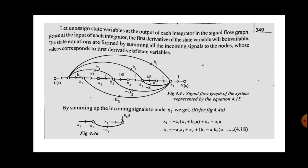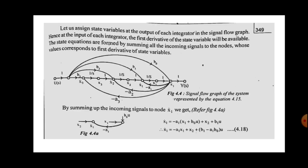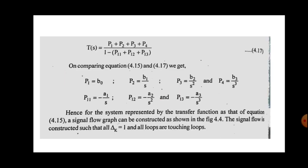All integrators are represented with gain 1/s. For forward path p₁ = b₀, there is no integrator, so it goes straight from input to output with scalar b₀. For p₂ = b₁/s, it goes through one integrator. For p₃ = b₂/s², it goes through two integrators. For p₄ = b₃/s³, it goes through three integrators. Three intermediate nodes are marked: 1, 2, and 3.